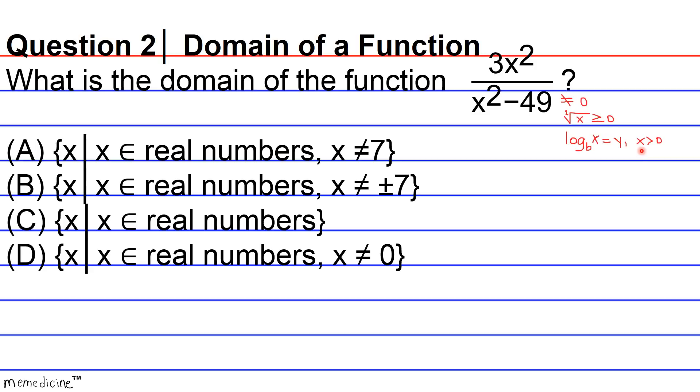All righty then, and in this particular problem, the only criterion that's going to matter is the first one. So we're going to go ahead and evaluate the denominator here based on this criterion. So x squared minus 49 is not equivalent to zero. I think I wrote this backwards here. My bad.